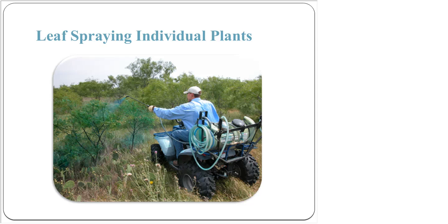One thing you can do for some brush species is individual plant treatments, or IPT, because it's easy to do and you can really target specific species or even specific trees. When you do a leaf spray, you apply a chemical mix to all of the leaves until wet but not dripping. The timing is critical: you apply it when the plant is storing its carbohydrates in the root system. When photosynthesis happens, that light hits the green leaf, creates carbohydrates or sugars, and the plant transports them down to the roots — tagging your chemical along with it, killing that bud zone.